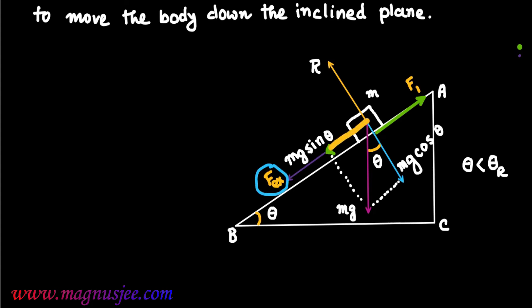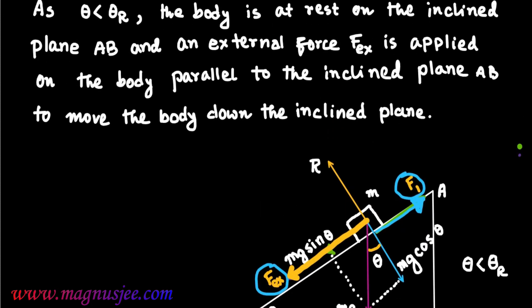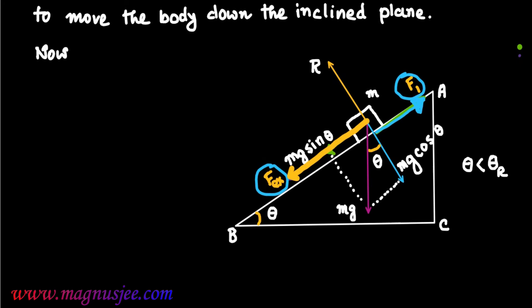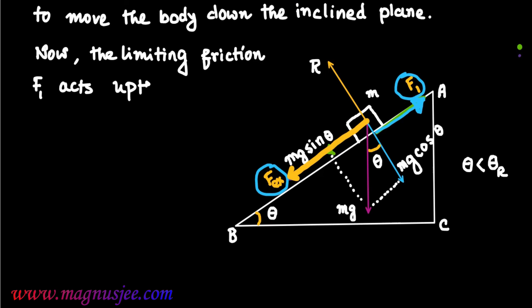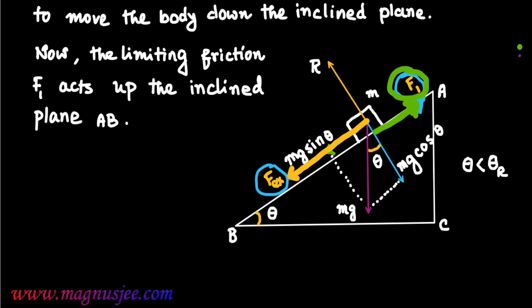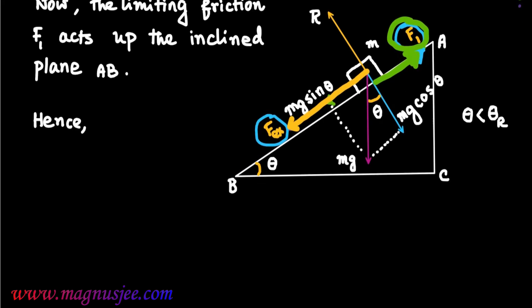FEX is the external force applied on the body down the inclined plane, parallel to the inclined plane. Limiting friction FL acts up the inclined plane on the surface in contact between the body and the rough inclined plane. At this equilibrium condition, the body is at the verge of moving.